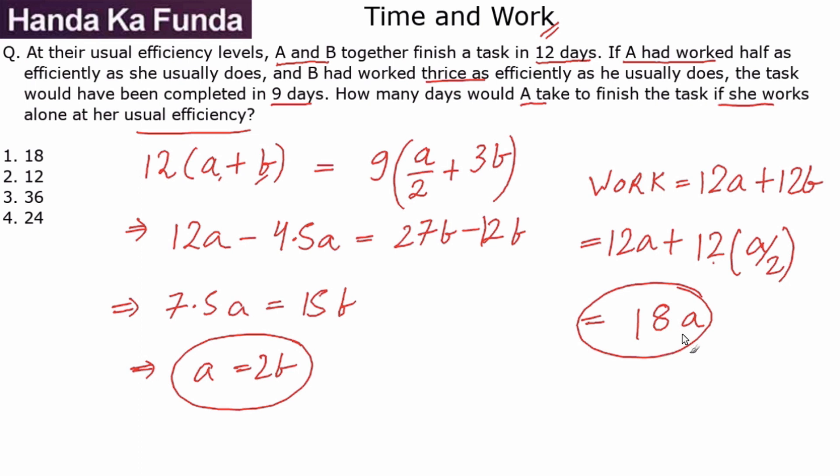So if the total amount of work that needs to be done is 18a, how long will it take for A to do the job? It will take 18 days for A to do that job, which is given to me as option one. Straightforward question, straightforward answer.